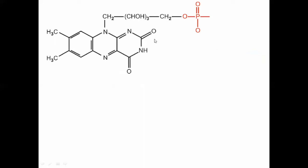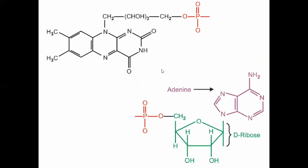Now let's look at the other nucleotide. This second nucleotide is also composed of base, sugar, and phosphate, but in this nucleotide the base used is adenine. So we have one nucleotide and a second nucleotide. These two nucleotides will be linked together through a phosphate bond — the two phosphate groups will form a bond and link the two nucleotides together to form the complete whole structure.